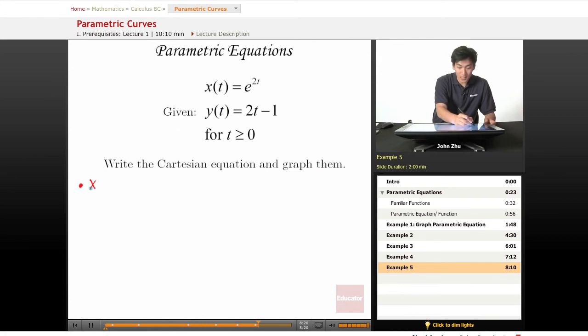One, solve for t. x equals e to the 2t. So if we take the natural log of both sides, this term will cancel out. So we have t equals ln of x over 2.